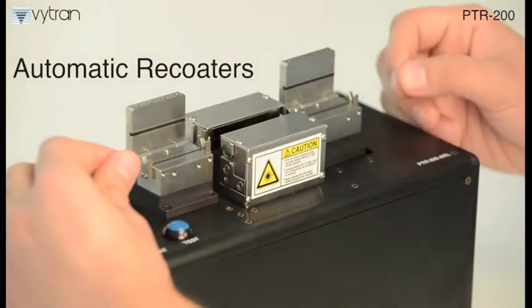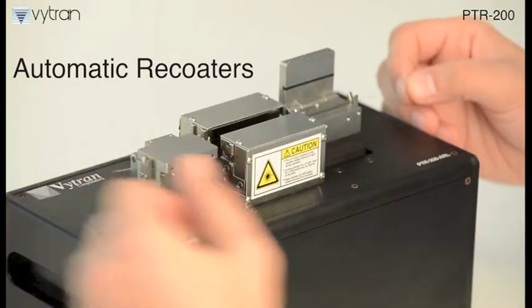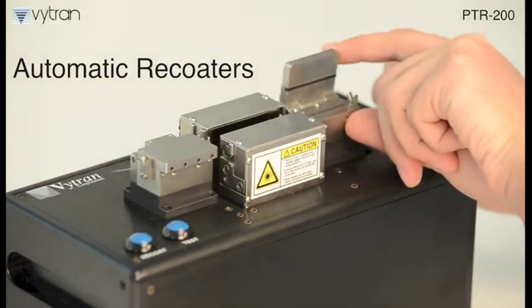The other recoater type is automatic. Our automatic recoaters use a pneumatic gripper assembly to open and close the mold plates in a front to back direction.